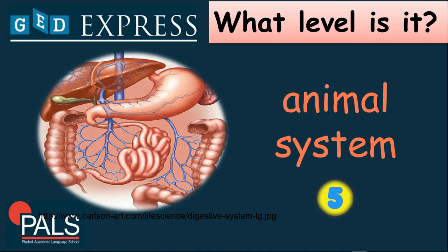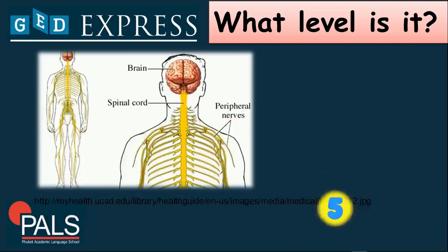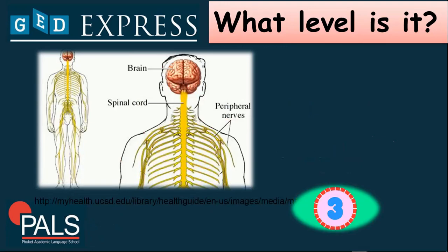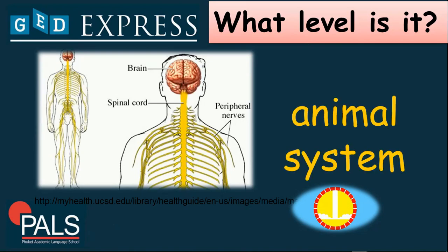Next, we have this one. The brain is connected with the spinal cord, and the spinal cord is also connected with the peripheral nerves. What level is it? That is an animal system.